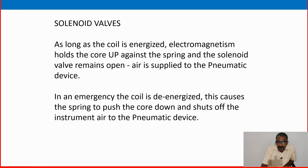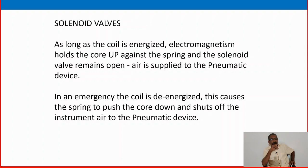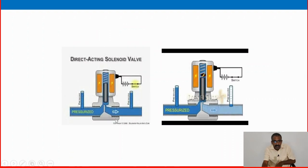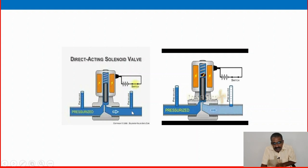The solenoid valve, as I told you, is a three-way valve. One side connects electrically — the solenoid valve is operated by electricity and magnetism. Electricity is used to magnetize, and the magnet pushes the valve open, allowing air to pass through it. The electrical connection energizes the magnet, and the magnet lifts up, keeping the valve open. This is the simple principle of the solenoid valve.